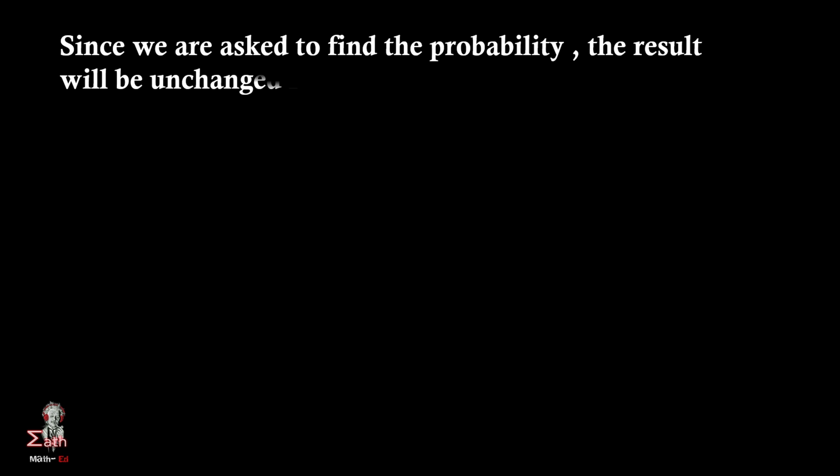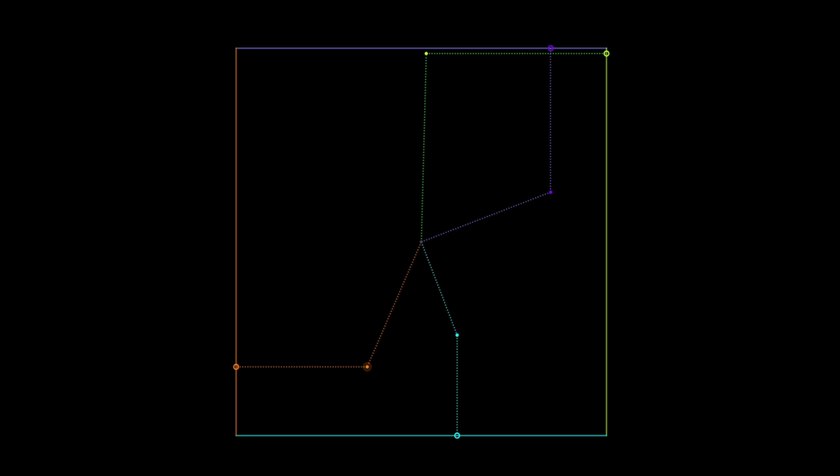Since this is a problem where we need to find out the required probability, the result will be unchanged if we replace this square with any square with sides of length 2 units as following. Now let's assume this is a square whose each side has length 2 units and we place this square in a Cartesian coordinate system and let its vertices be (1,1), (-1,1), (-1,-1), (1,-1).